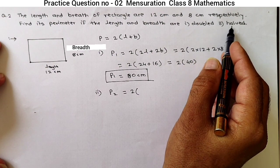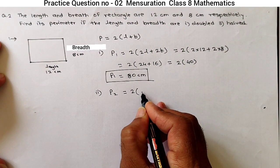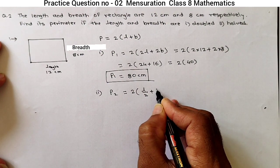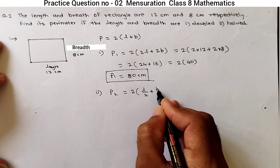Now, L is half. So, it will be L by 2. Plus, B is also half, breadth is also half, so B by 2.